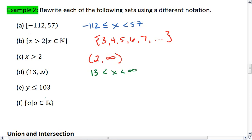Part E, we have Y is less than or equal to 103. This means the values for Y will be from negative infinity to 103. We do not include infinity, so we use a rounded parentheses. But we do include 103, so we use that square bracket.